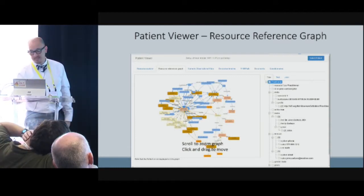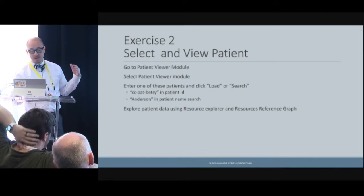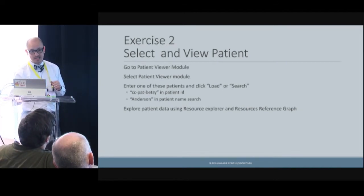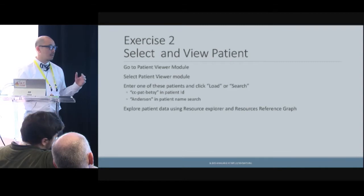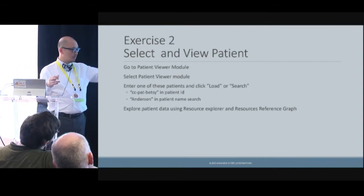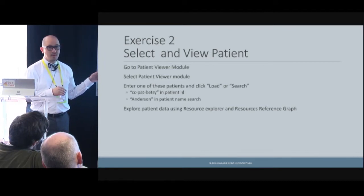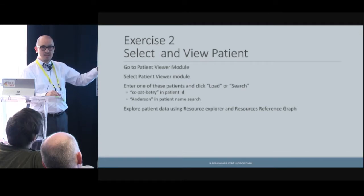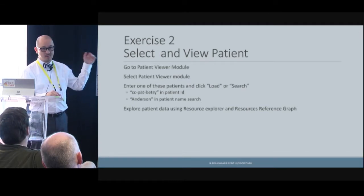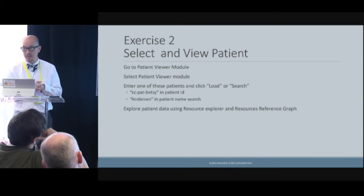For clinicians especially, who may not have a tech background, it can be challenging to think about how resources relate to one another — but when you see this graph, it makes sense. You'll see that a care plan has a bunch of conditions, observations, and practitioners related to it. When you click on any of these, you can see the resource in either the tree view, text view, or JSON view. In the exercise, you'll go in, load up the patient CC Pat Betsy in the patient ID and do a search, then click and load. Everything starts from that main page — if you change server names, close your other tabs and restart the modules so it knows to look in the right place.